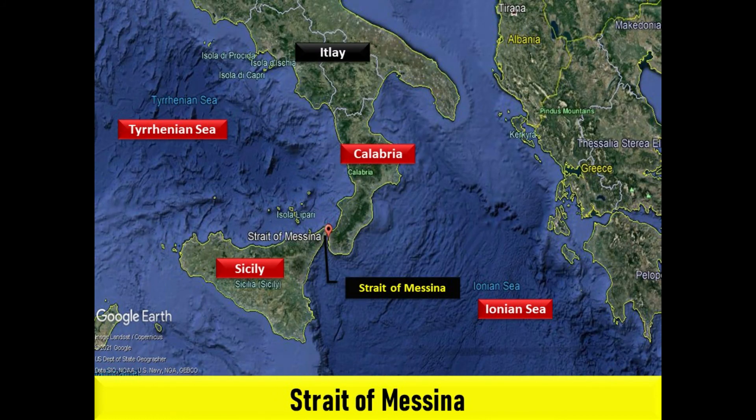The Strait of Messina is a narrow strait between the eastern tip of Sicily and the western tip of Calabria in the south of Italy. It connects the Tyrrhenian Sea to the north with the Ionian Sea to the south, within the central Mediterranean.